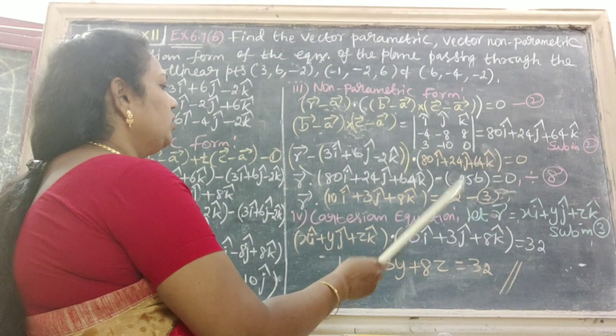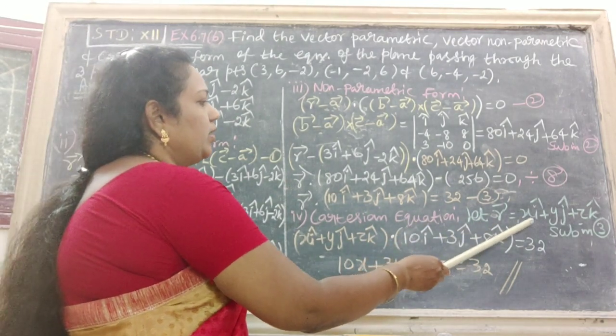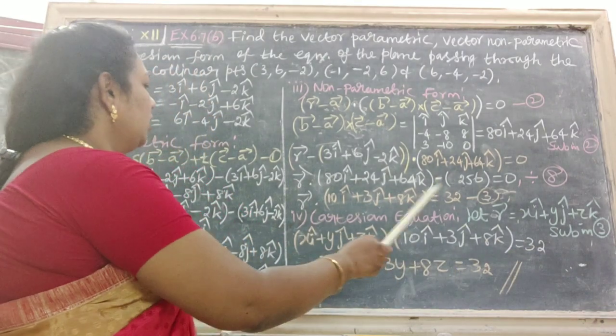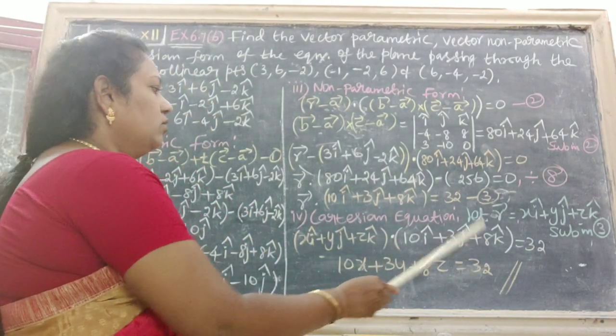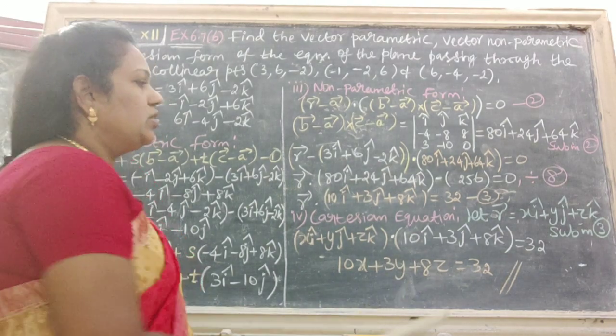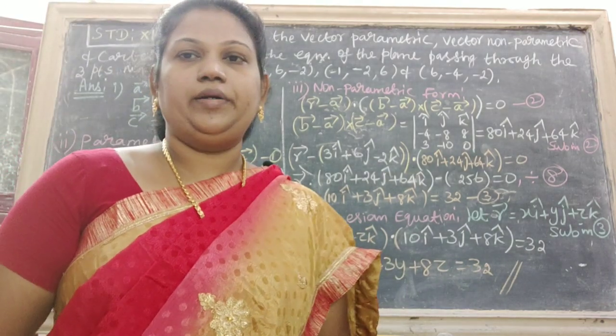Finally, Cartesian equation. Let R vector equal to X I cap plus Y J cap plus Z K cap. Substitute in the third. Then multiply by dot product. We get the answer 10 X plus 3 Y plus 8 Z equal to 32.